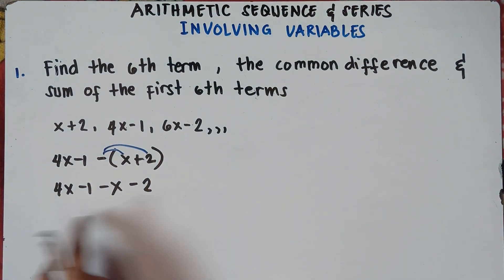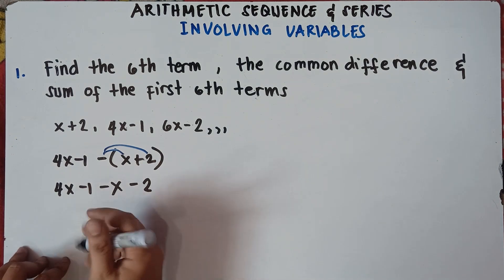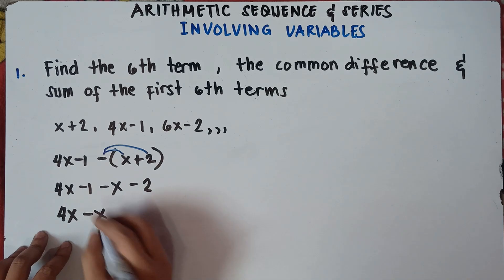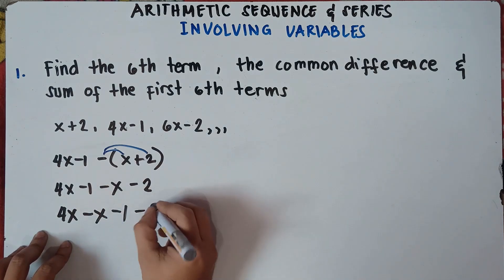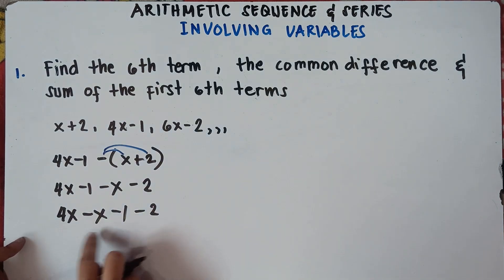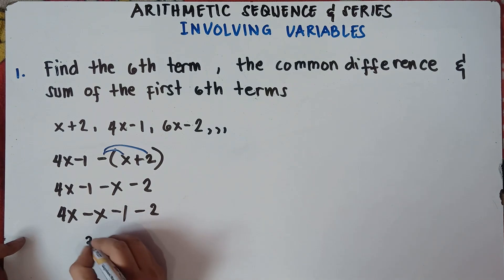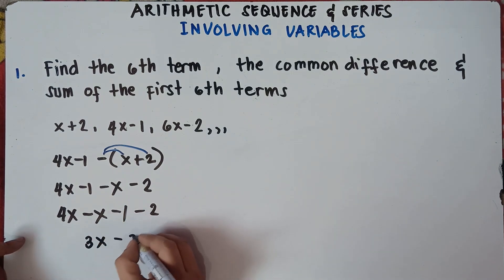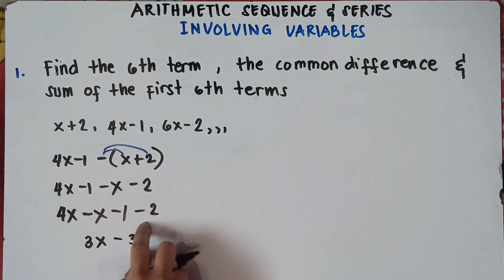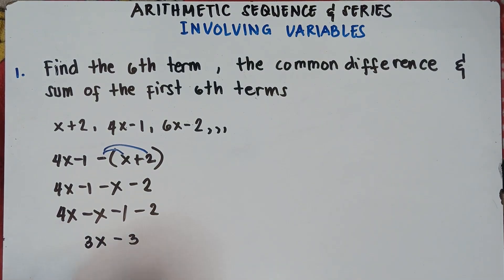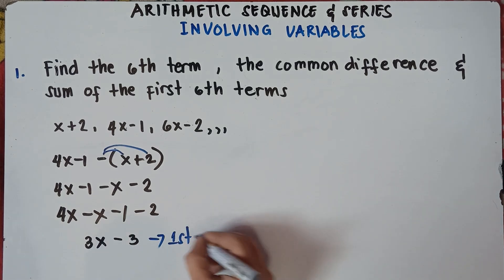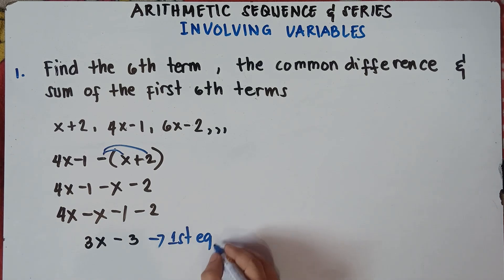Combine like terms. We arrange this: 4x minus x minus 1 minus 2. So 4x minus x equals 3x, and negative 1 minus 2 equals negative 3. Since the signs are the same, copy the sign and add. So our first equation is 3x minus 3.